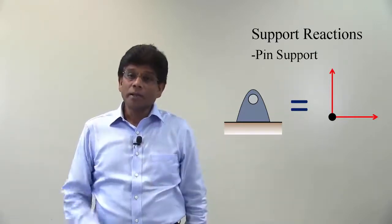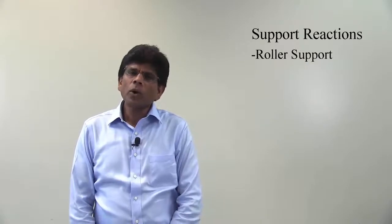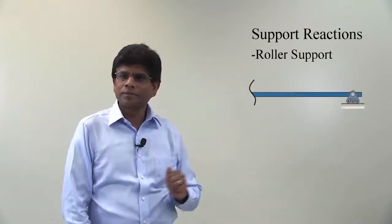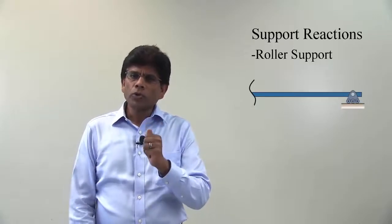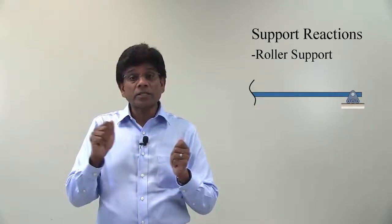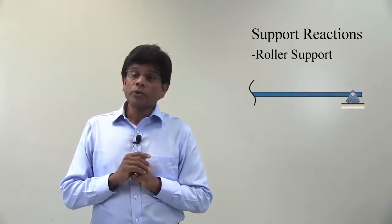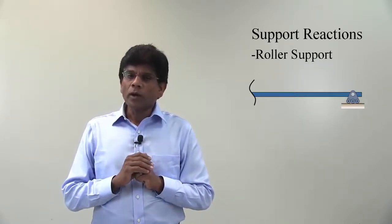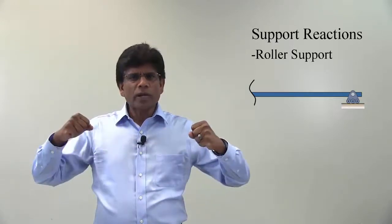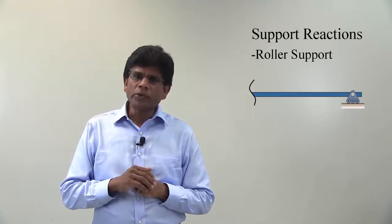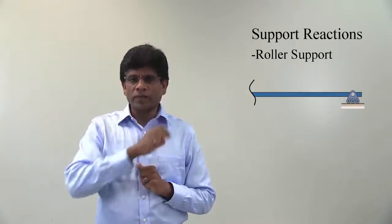Now let us consider the roller support. A roller support is typically represented by the figures as shown here. Roller support allows rotation and translation along the surface upon which the roller rests. This support is widely used in the industry to account for thermal expansion of structural elements such as beams. This support allows the body to rotate as well as move along the surface.